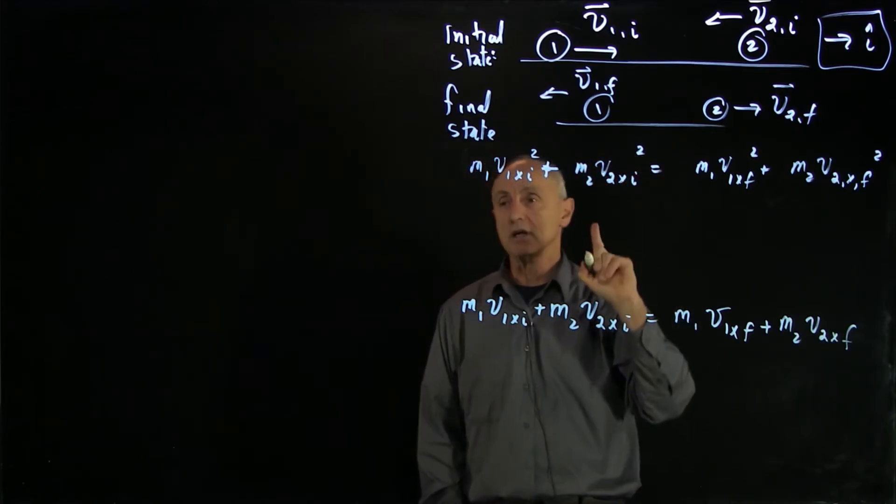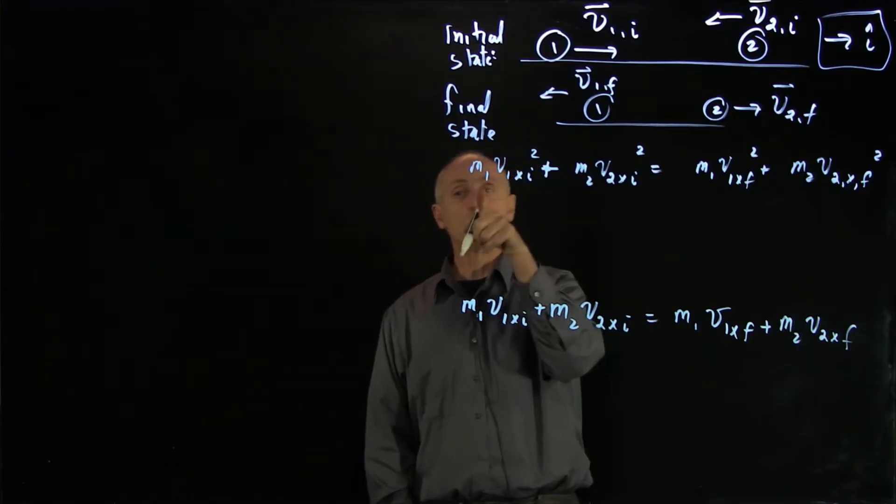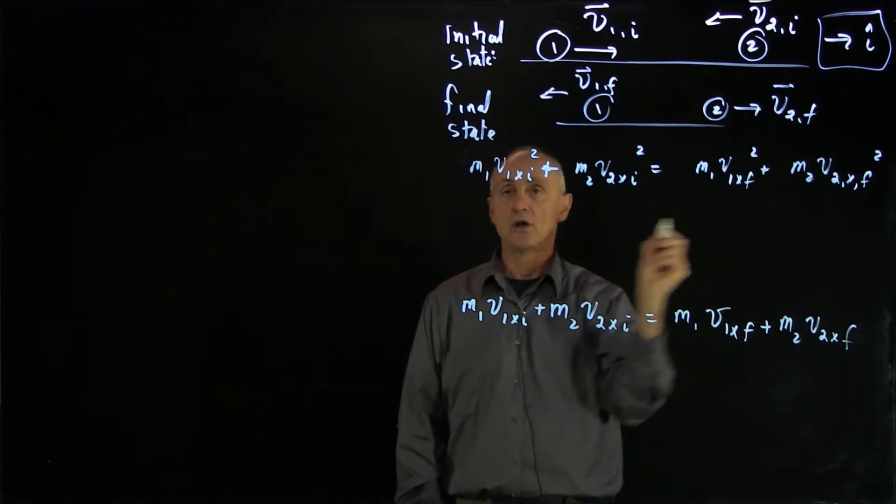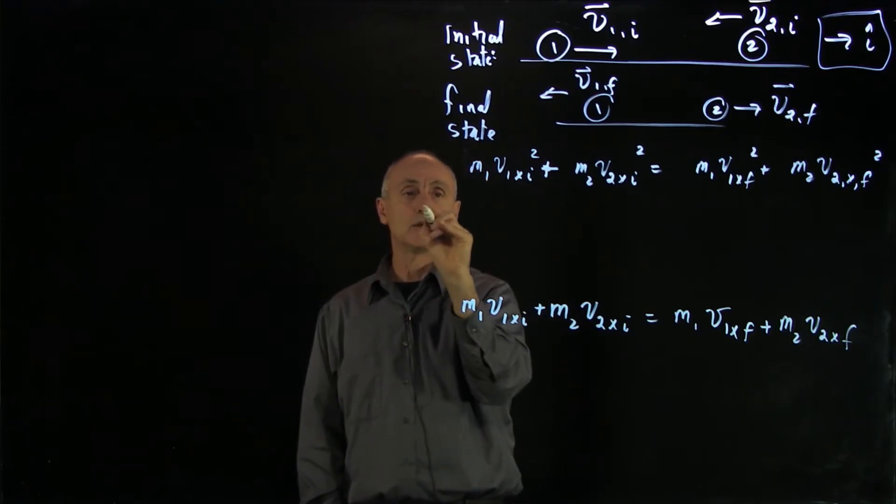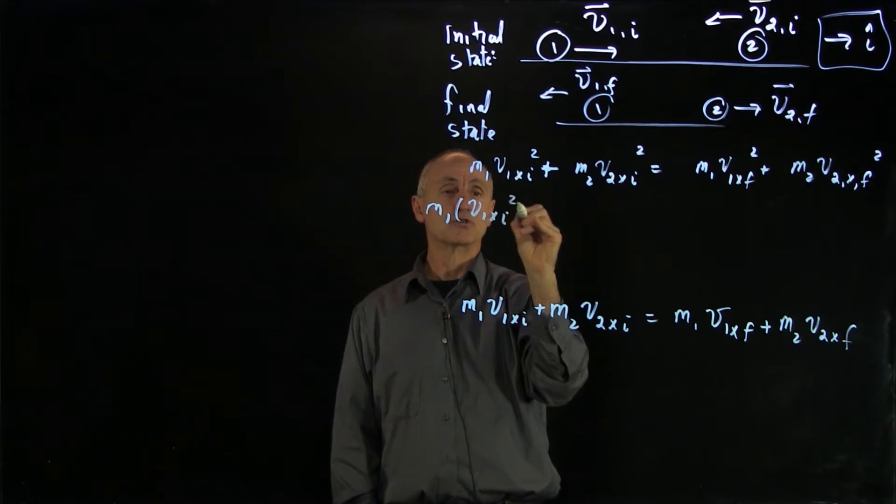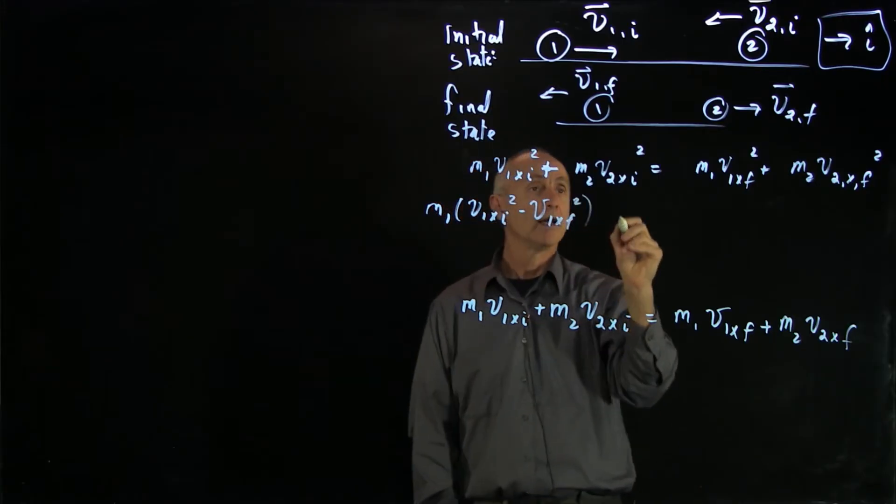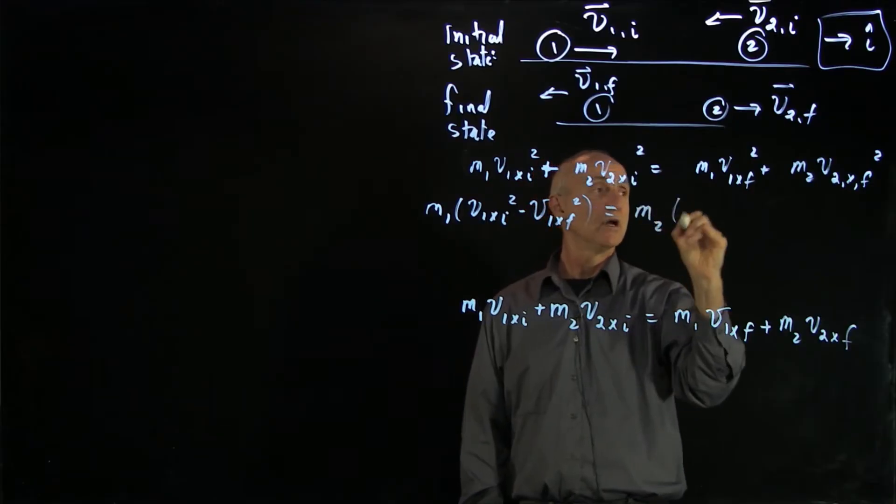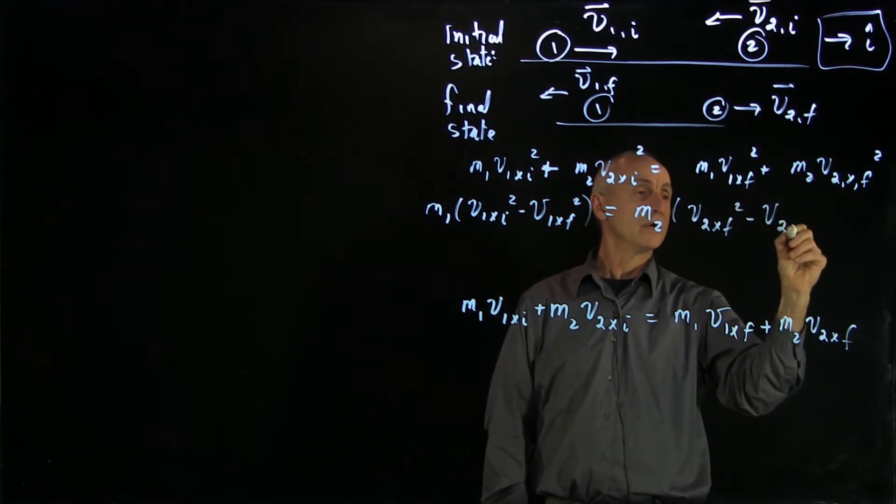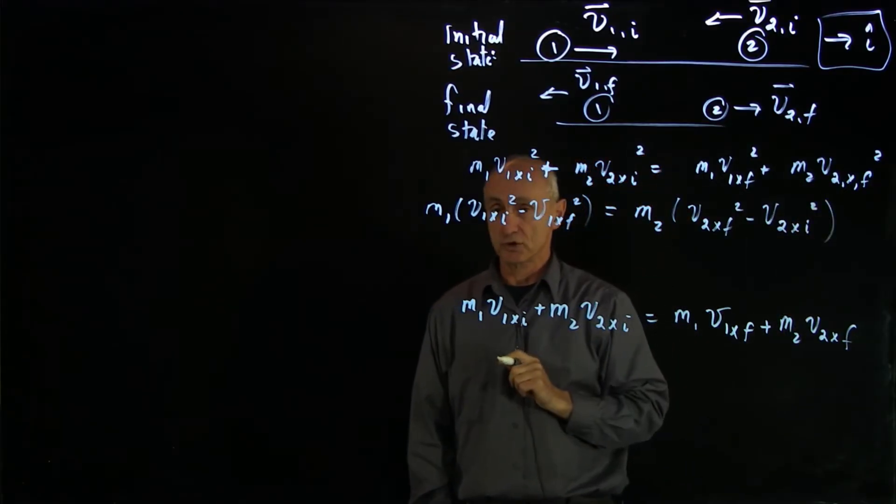Now, this energy equation can be factored by bringing all the m1 terms to one side and the m2 terms to the other side. So when I write that, I'll need a little room. I have m1 v1x initial squared minus v1x final squared, and that's equal to m2 v2x final squared minus v2x initial squared. So I've just brought those terms over to the other side.